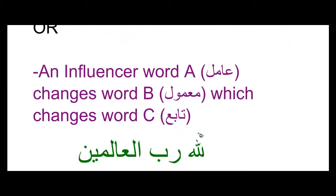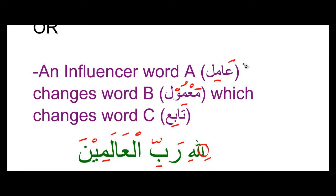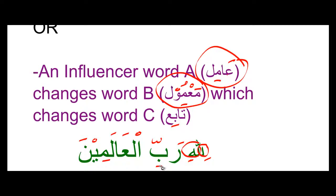Another way that i'raab works is that an influencer word A — amil — changes word B — ma'mool — which changes word C, which is tabi'. Taking that same verse, we have lillahi rabbil alameen. We have Laam which is the amil, then Allah which is the ma'mool — that's why it has the kasra. Then we have Rab, which I said is an adjective describing Allah, so Rab takes the same haraka as Allah does. Because Allah has a kasra, Rab also gets a kasra, so Rab is what's known as a tabi'.